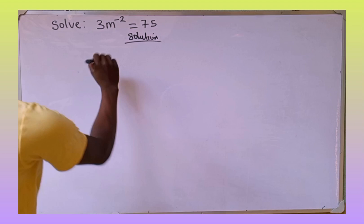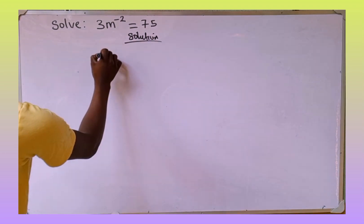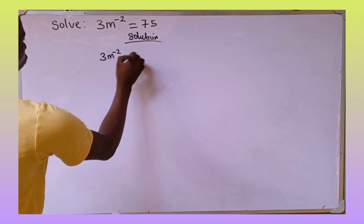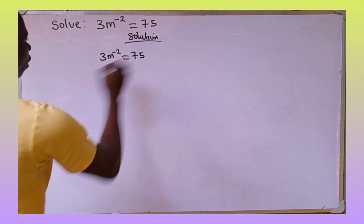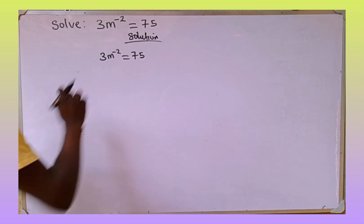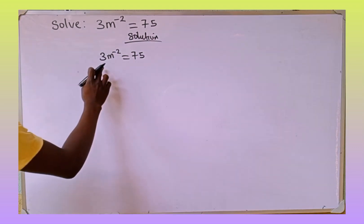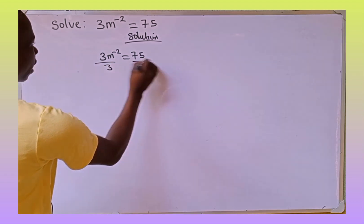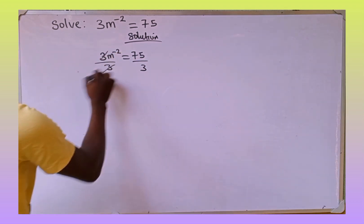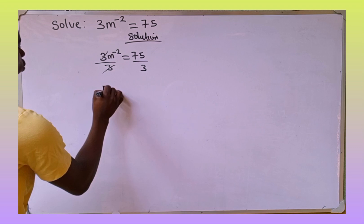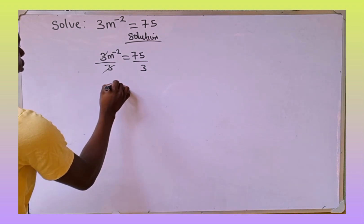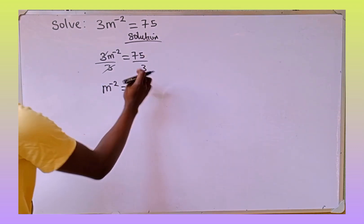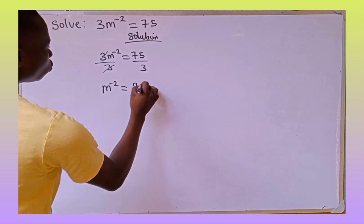The first thing we are going to do is to rewrite the equation which is 3m to the power of minus 2, which is equal to 75. The next thing we are going to do is to divide through by 3 to eliminate this 3, so that this 3 is going to cancel out this 3. m to the power of minus 2 will equal to 75 divided by 3, which is 25.